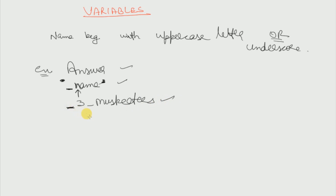If I write 'Ice' with a capital I, this is also a variable because it starts with a capital letter. If I write 'ice' with a lowercase i, then this is a constant — an atom. This is all about variables. Next we shall see anonymous variables in our next video. If you like this video please hit the like button and subscribe for more such videos. Thank you.